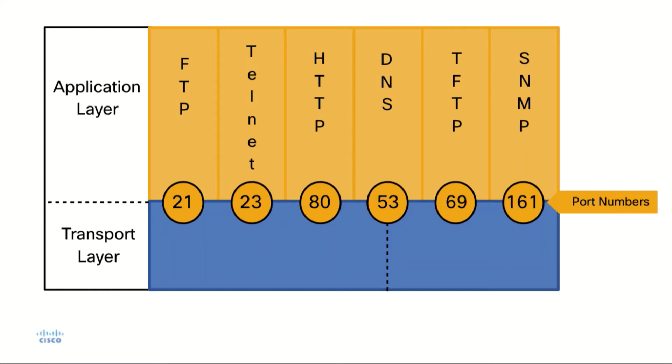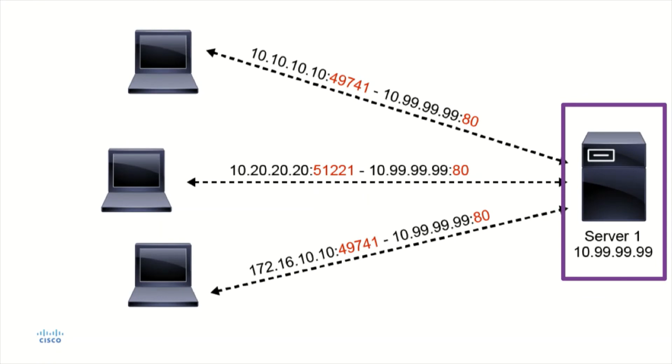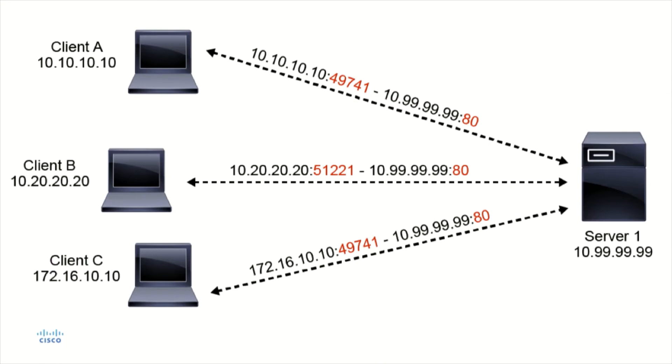In this example we have server number one which is running a daemon that is offering web services. A user, client A, client B, or client C, is going to establish a connection to that web server. As the TCP segment is created on client A, B, and C, the destination IP address will be determined using DNS. We know that we're making an HTTP connection because of the application that is in use on the client computer.